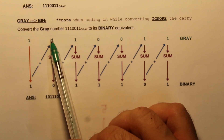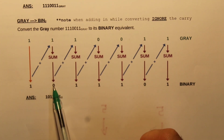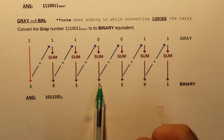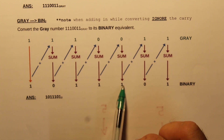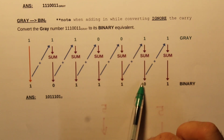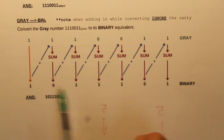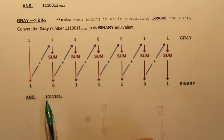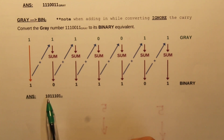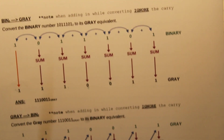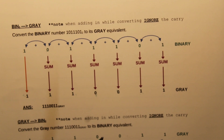This time, instead of adding across, we add diagonally — see the direction of the arrow. We say one plus one is zero (ignore carry), zero plus one is one, one plus zero is one, one plus zero is one, one plus one is zero (ignore carry), zero plus one is one. The answer is 1011101, which is the same number we began with in the first example — we're back to binary.